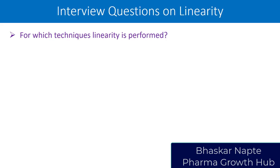Before we discuss the questions, let us understand what is meant by linearity. Linearity is the ability of an analytical procedure to obtain a response which is directly proportional to the concentration of an analyte. The response can be in terms of absorbance value for UV spectroscopy, or peak area in case of chromatography. The concentration of the analyte can be in terms of microgram per mL or ppm.